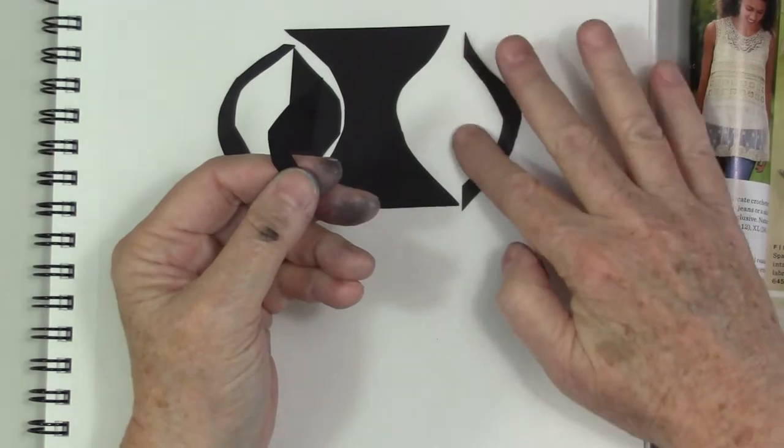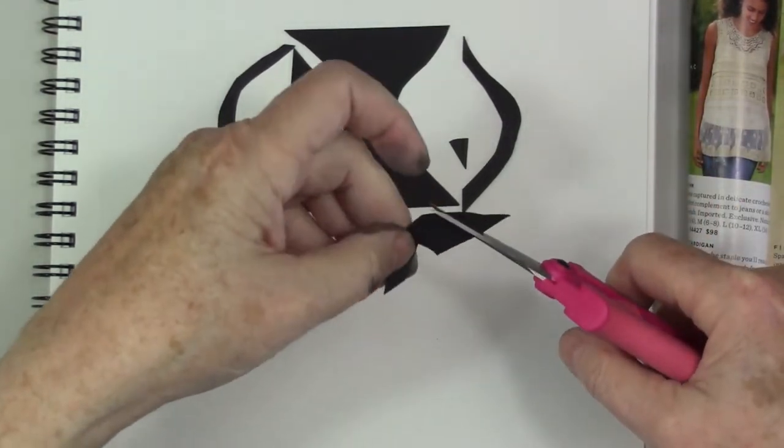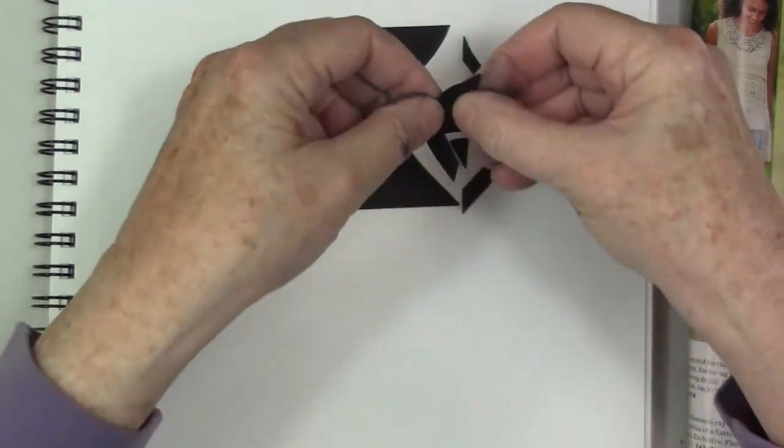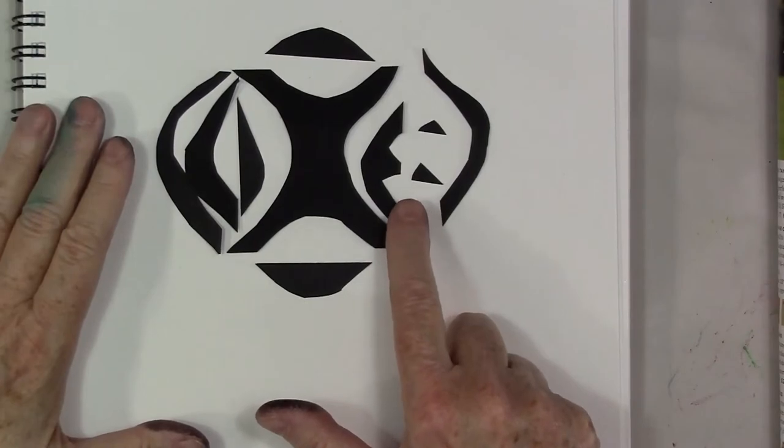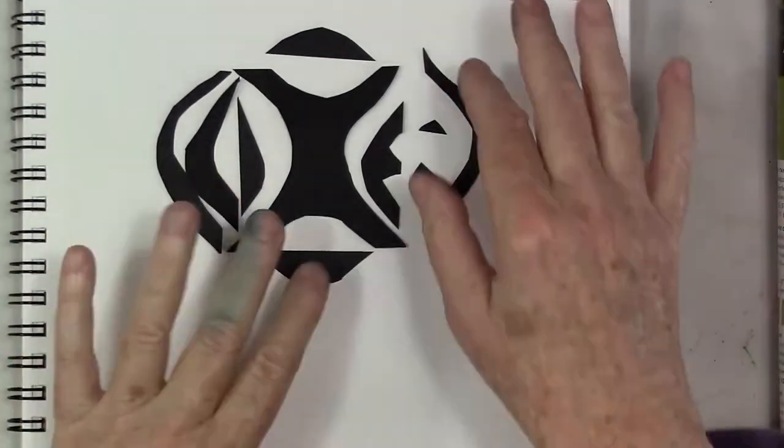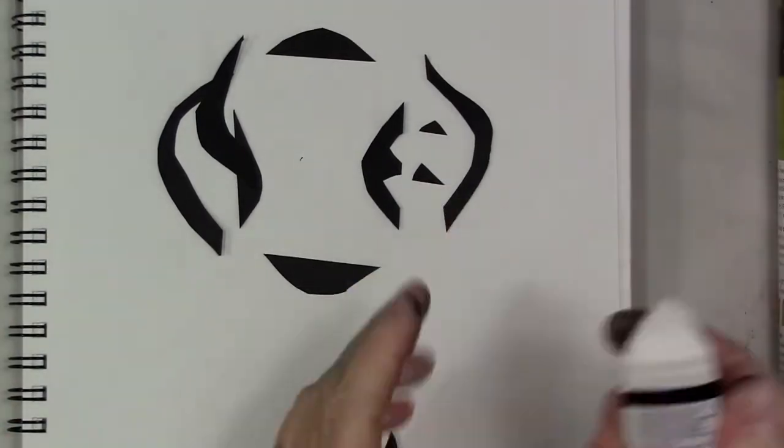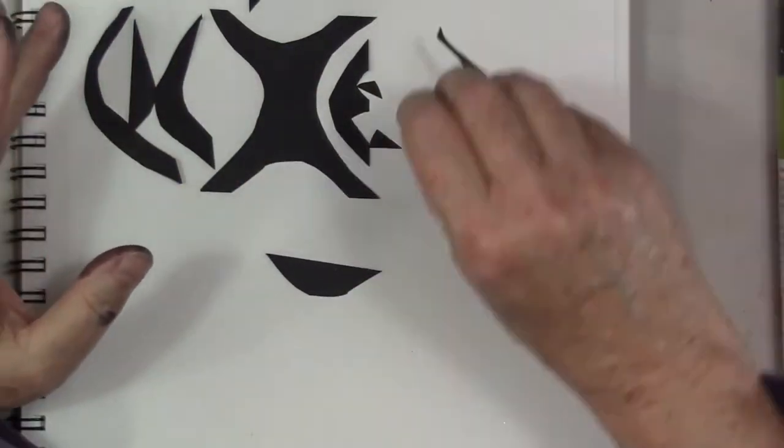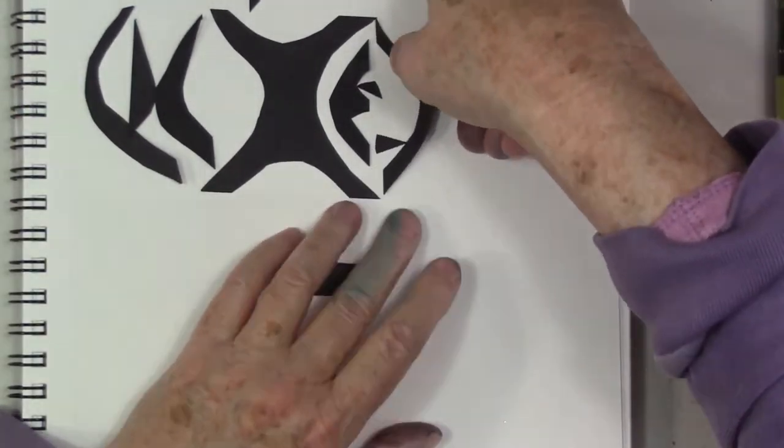Okay let's make another cut on the other side of this. And again we're flipping it straight over and laying it down. You can see already how important that white space is.